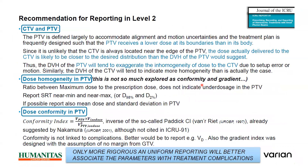CTV and PTV are defined largely to accommodate alignment and motion uncertainties. The treatment plan is frequently designed such that the PTV receives a lower dose at its boundary than at its center. Since it is unlikely that the CTV is always located near the edges of the PTV, the dose actually delivered to the CTV is likely closer to the desired distribution than the DVH of the PTV would suggest. Thus, the DVH of the PTV tends to exaggerate dose inhomogeneity, while the DVH of the CTV tends to indicate more inhomogeneity due to setup error or motion uncertainty.